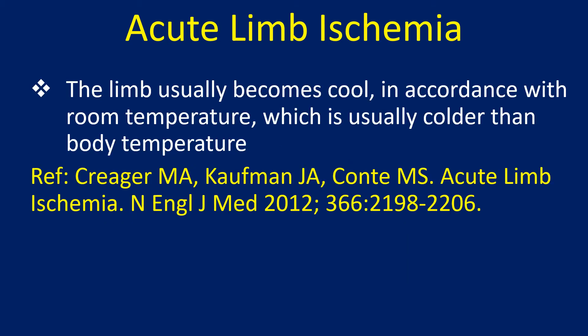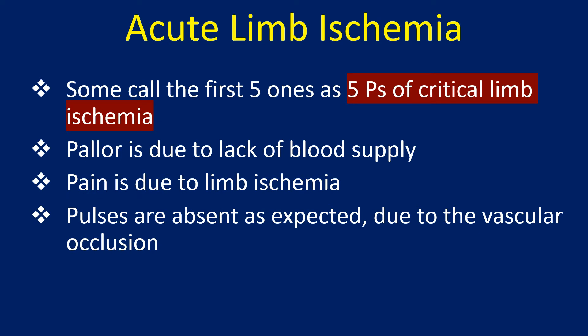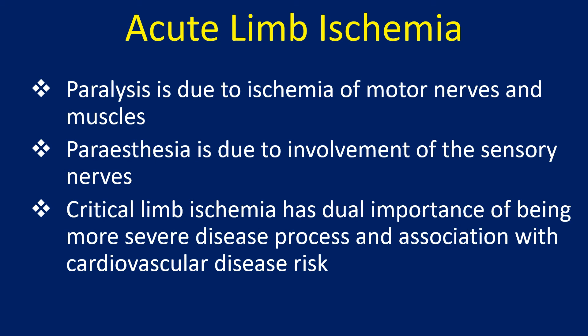The limb usually becomes cold in accordance with room temperature, which is usually colder than body temperature. Some call the first five the 5 P's of critical limb ischemia. Pallor is due to lack of blood supply, pain is due to limb ischemia, pulses are absent due to vascular occlusion, paralysis is due to ischemia of motor nerves and muscles, and paresthesia is due to involvement of sensory nerves.